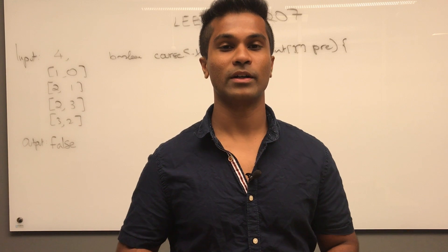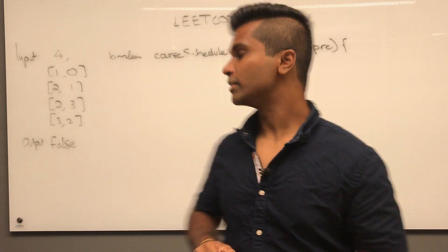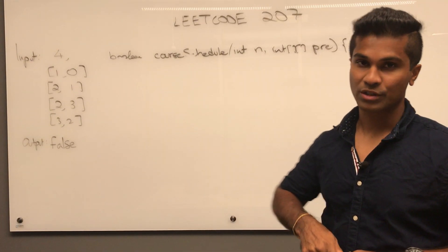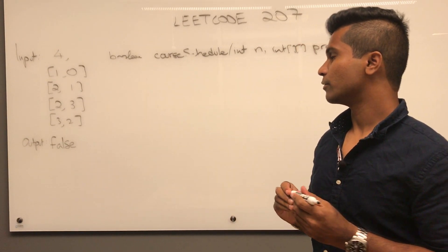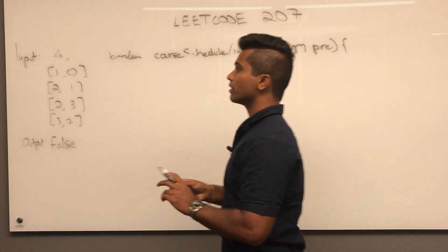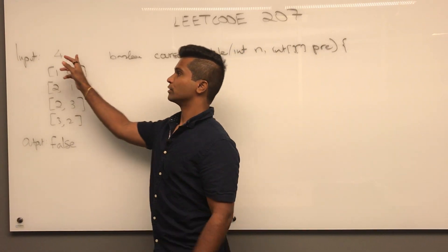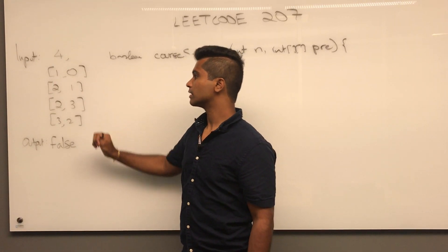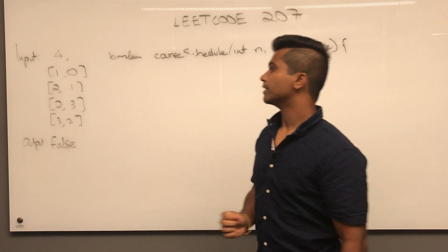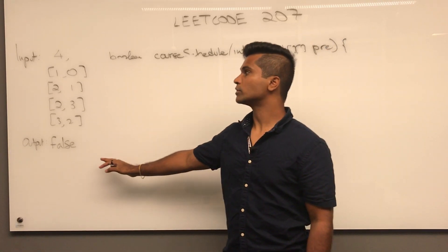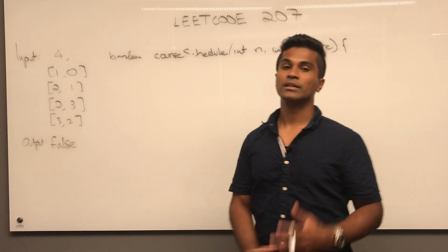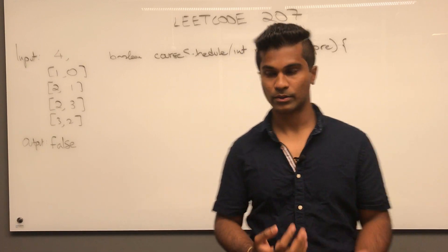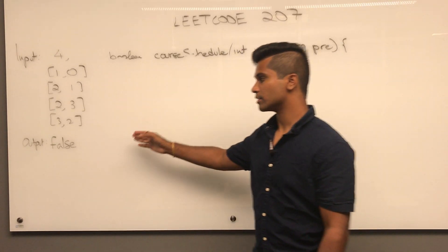What's up everyone, today we're going to go over LeetCode 207 Course Schedule. The input is going to be a number which is the total number of courses and also a list of edges, and the output needs to be true or false — whether we can complete all the courses along with their prerequisites.